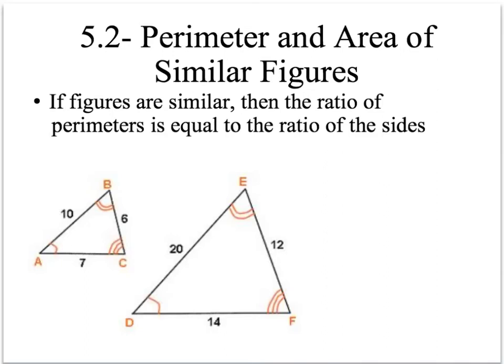Greetings everybody, Mr. Wahlberg here. Section 5.2, perimeter and area of similar figures. Obviously we spent some time in the last section doing similar figures. Now we're going to look at the ratio between the two different figures, and eventually this will lead us to being able to figure out unknown sides. Obviously we've got two figures here. They are similar. If figures are similar, then the ratio of the perimeters is equal to the ratio of the sides.